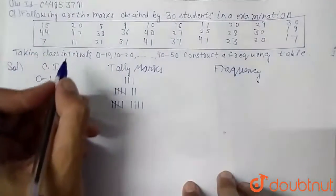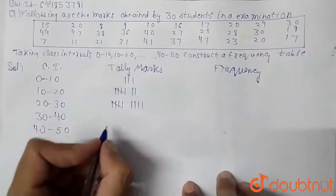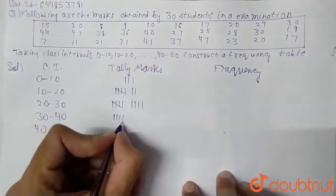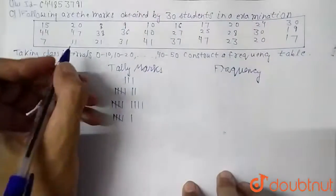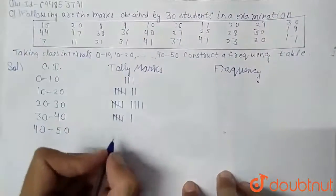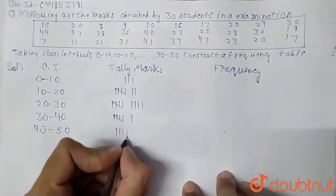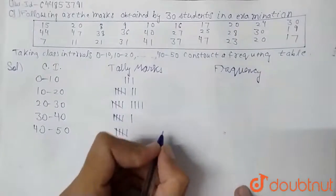So now if we check from 30 to 40, we have 6 values here: 1, 2, 3, 4, 5, 6. So if we check from 40 to 50, we have 5 values: 1, 2, 3, 4 and 5.